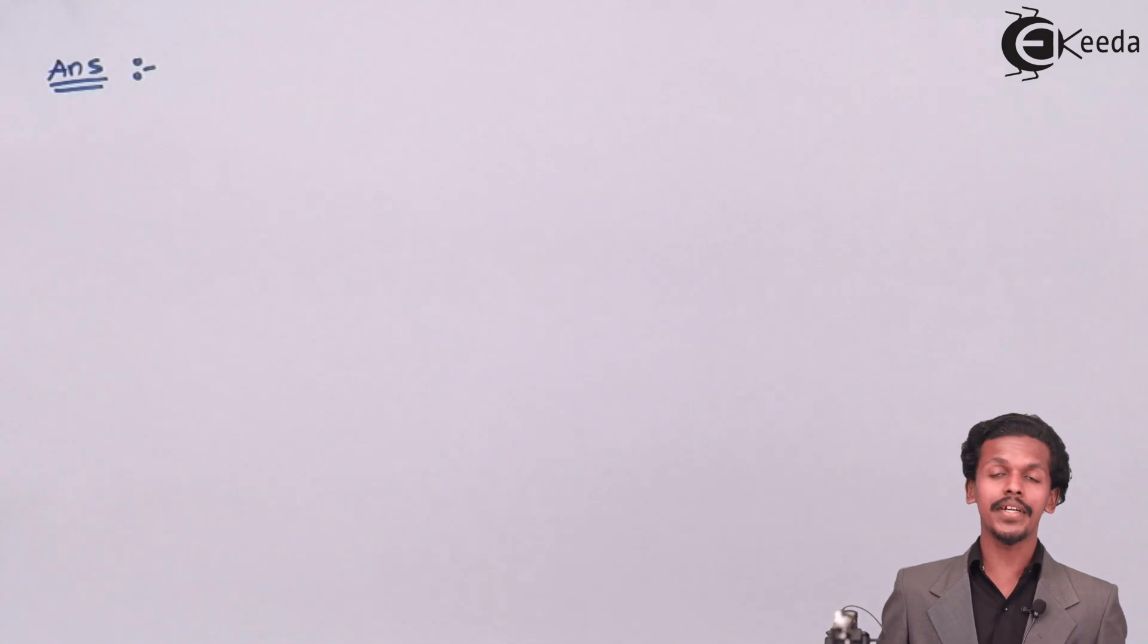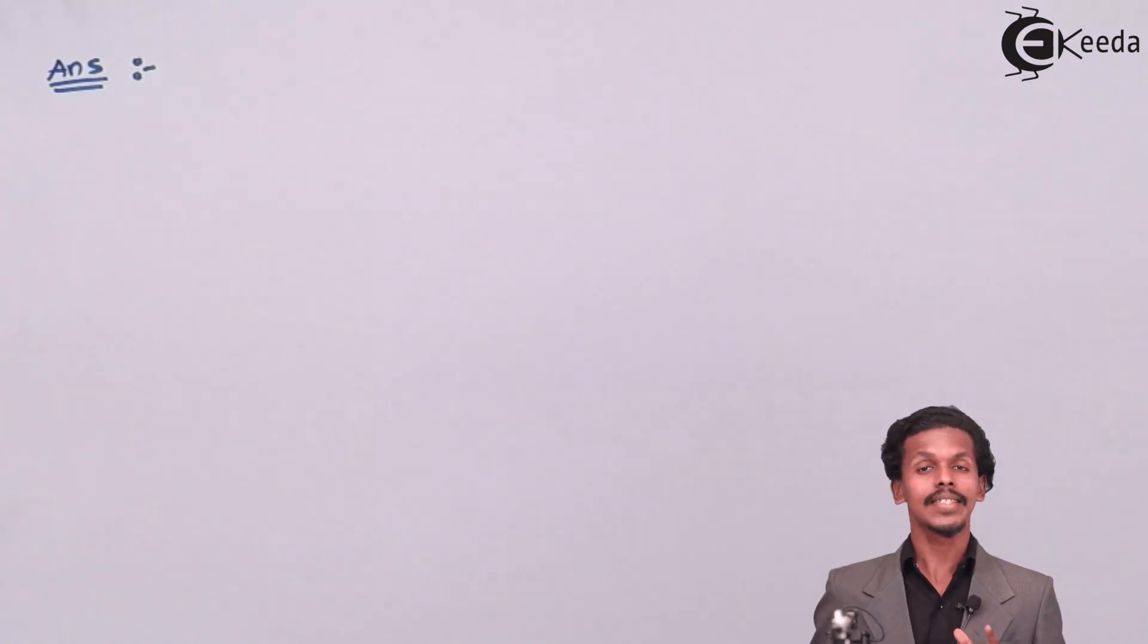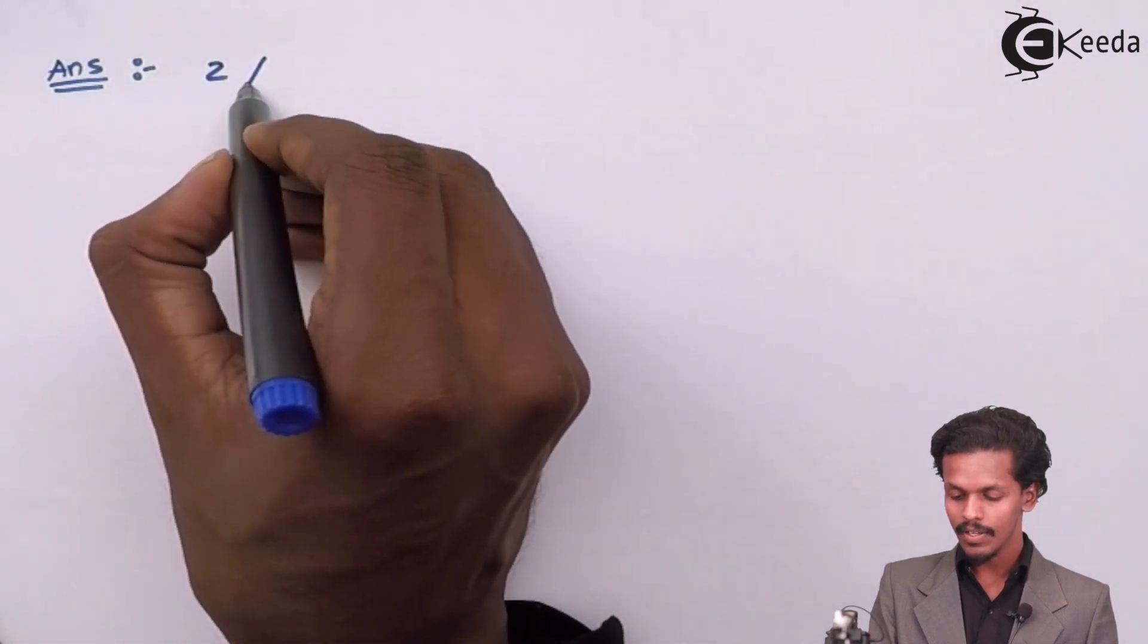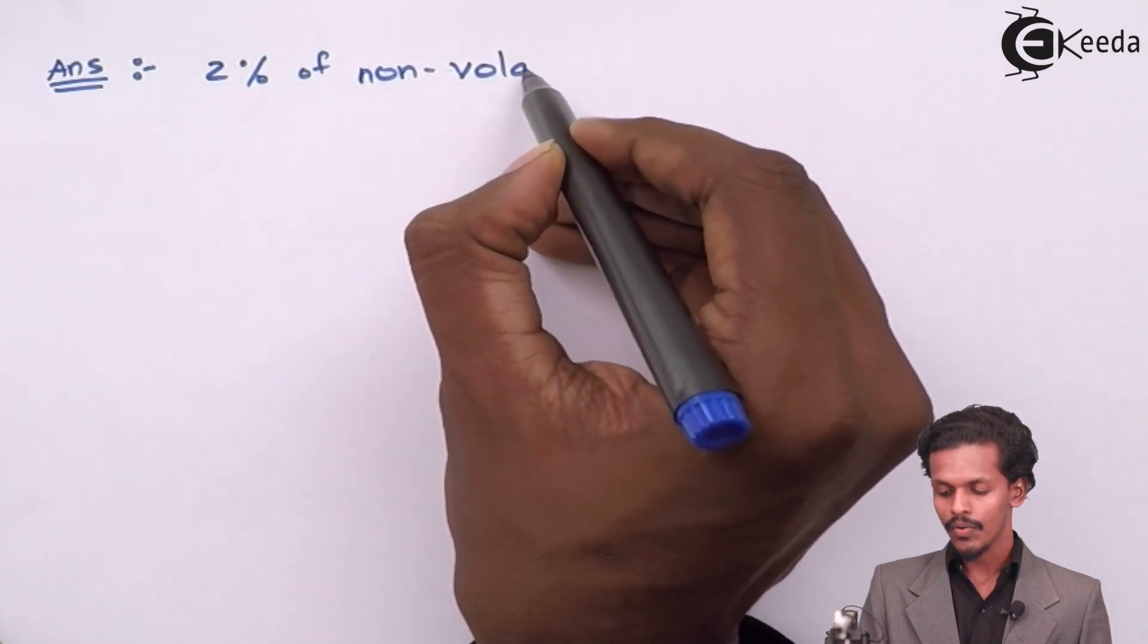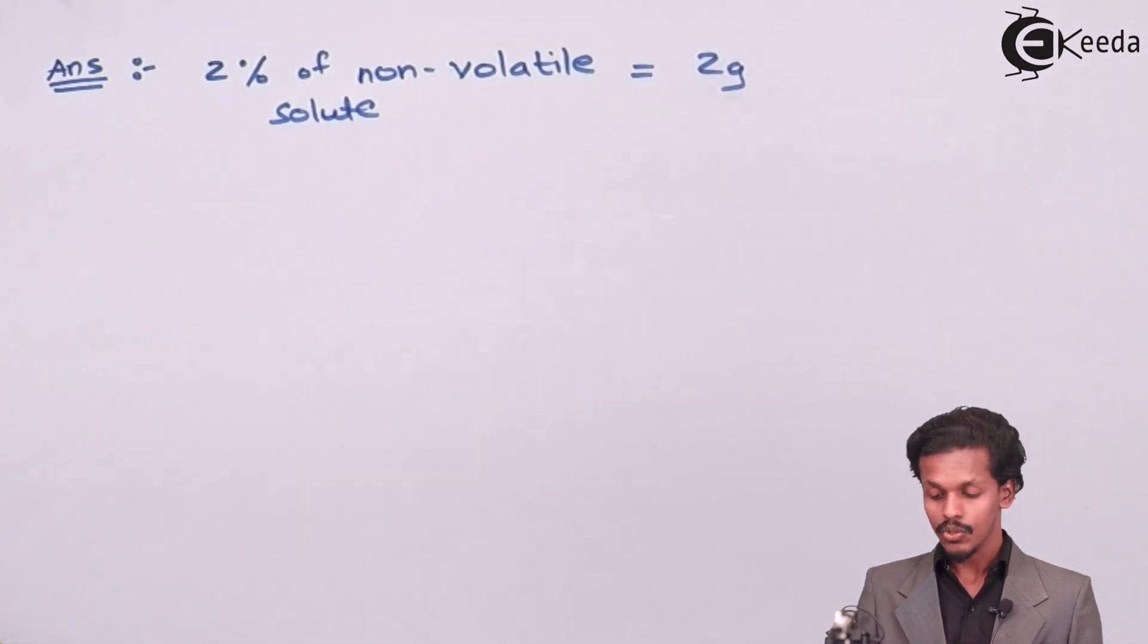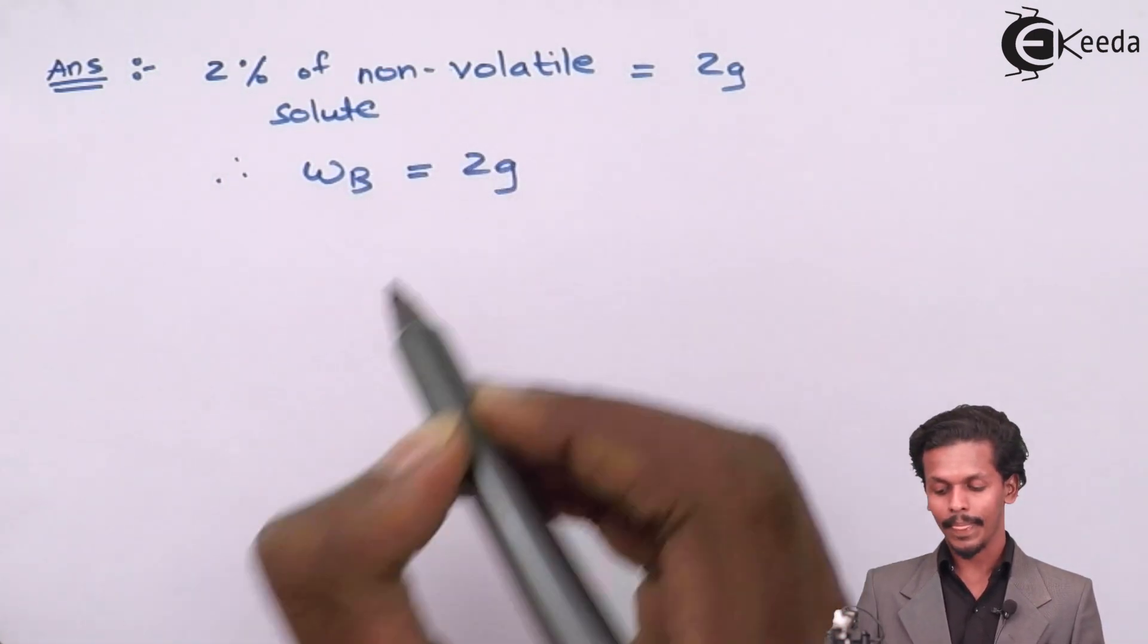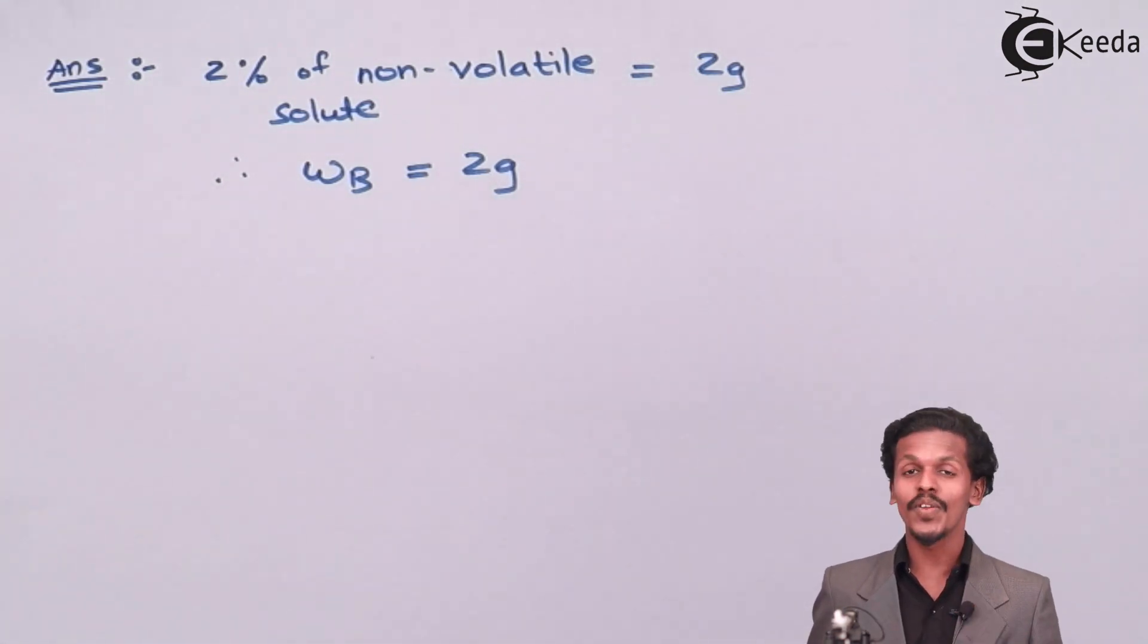Since it is a 2% solution, the solution contains 2% of non-volatile solute, therefore I could write in this manner, the 2% of non-volatile solute consider it as 2g. So therefore WB or the mass of the solute is now 2g. So among the 100%, the 2% is solute while the rest will be solvent.